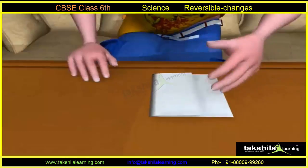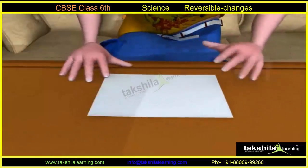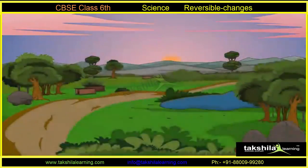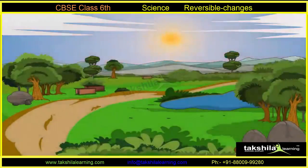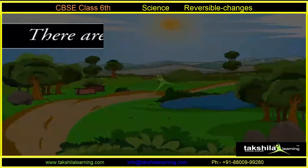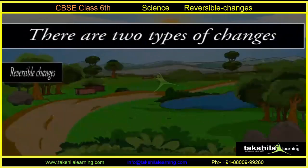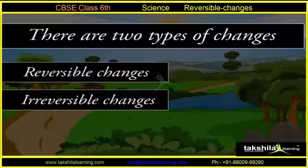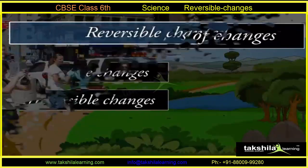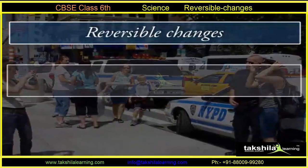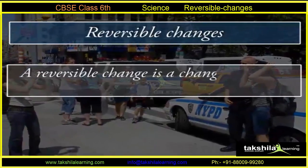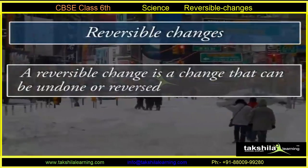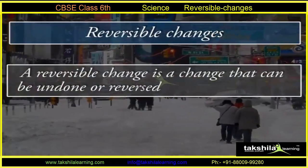We can group various changes on the basis of similarities between them. There are two types of changes: reversible changes and irreversible changes. A reversible change is a change that can be undone or reversed. Let's see some examples of reversible changes.